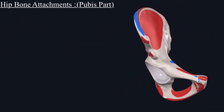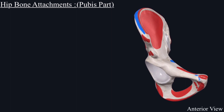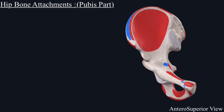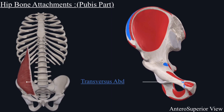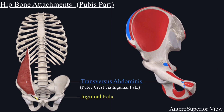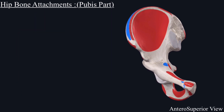Those are the muscles that originate from the pubis part. The muscles that are inserted on the pubis part include the external abdominal oblique muscle, which is inserted on the pubic tubercle, and the transversus abdominis muscle, which is inserted on the pubic crest and pectineal line indirectly via the inguinal falx. This is all about the attachment of the pubis part.